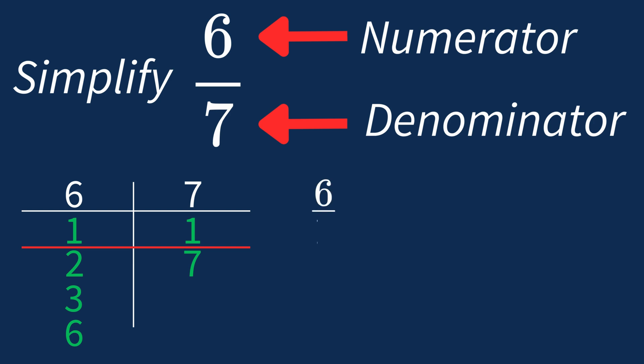Dividing the numerator 6 by 1 gives us 6. Dividing the denominator 7 by 1 gives us 7.